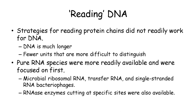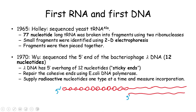The first studies for reading nucleotide sequences focused on RNA because purified RNA was more easily available. Microbial ribosomal RNA, transfer RNA, and single-stranded RNA bacteriophages were the first to be studied because it was easier to isolate them in large quantities. RNA digestion enzymes to cut these RNA molecules at specific sites were also available. The first RNA molecule that was sequenced was the yeast alanine transfer RNA in 1965 by Robert Holley. He used ribonuclease enzymes to digest the 77-nucleotide-long transfer RNA into smaller fragments and identified them using ion exchange chromatography and gel electrophoresis, then used these fragments to infer the sequence of the entire molecule. It took about three years to identify the sequence of the 77 nucleotides.